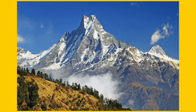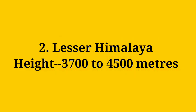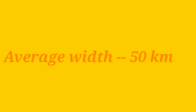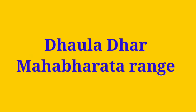The Himalaya consists of three parallel ranges in its longitudinal extent. The northernmost range is known as the Great Himalaya or Inner Himalayas, also known as Himadri. It is the most continuous range consisting of the loftiest peaks with an average height of 6000 meters and contains all the prominent Himalayan peaks. The range lying to the south of Himadri is known as Himachal or Lesser Himalaya. The altitude varies between 3700 and 4500 meters and the average width is 50 km. The Pir Panjal range forms the longest and most important range, while Dholadhar and the Mahabharata ranges are also prominent ones.